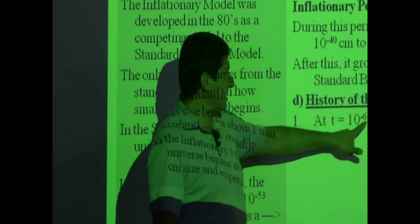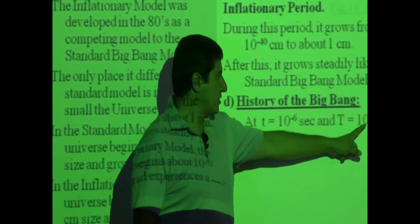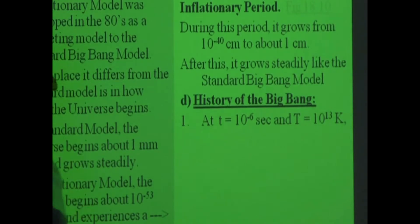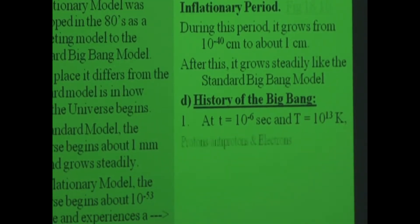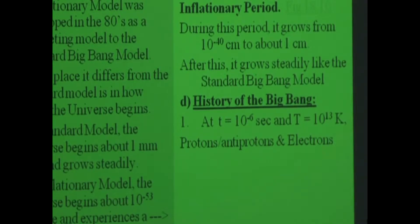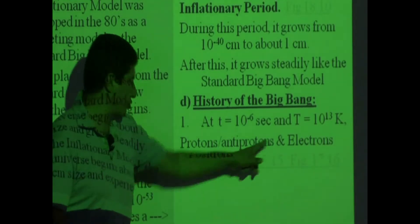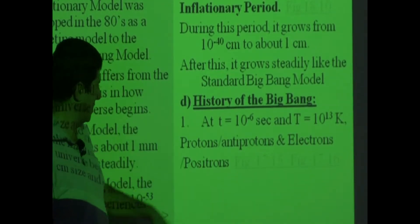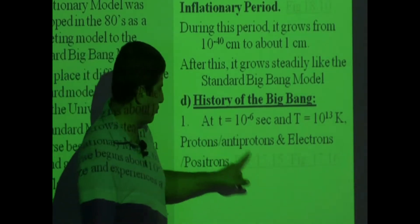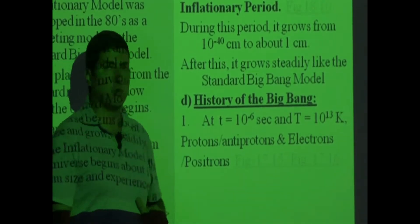At 10 to the minus 6 seconds after the Big Bang, the temperature has cooled down to 10 to the 13 Kelvin. We have protons and antiprotons, electrons, and antielectrons — which are called positrons. So positron is just a short word for antielectron. Proton, antiproton, electron, antielectron, which is a positron. So what's happening?